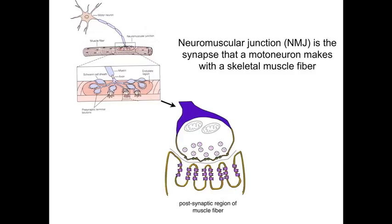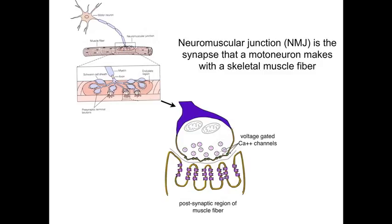Turning first to the bouton, there are mitochondria. There are also synaptic vesicles that are filled with molecules of acetylcholine. And of course, there are voltage-gated calcium channels, which are opened as an action potential invades the terminal.